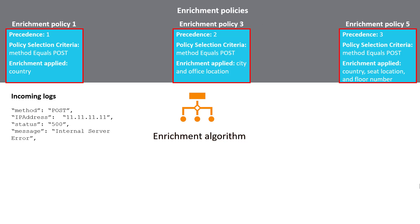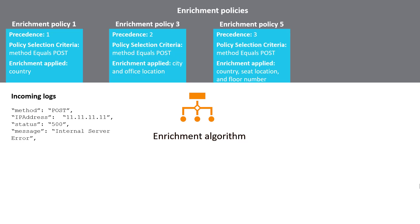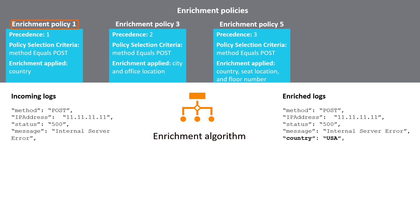Next, the algorithm sorts the selected policies in the ascending order of the precedence value. Note that the lower the number that you select, the higher the precedence. Starting with the highest precedence, enrichments configured in enrichment policy 1 are applied and the country information is added to the logs. Moving on to the policy with the next highest precedence value, enrichments configured in enrichment policy 3 are applied and city and office location are added to the logs.